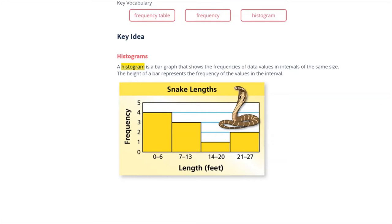Okay, so we are going to look at histograms. Now a histogram is a bar graph that shows the frequencies of data values in intervals of the same size.